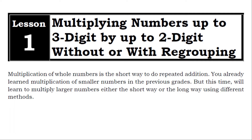Lesson 1: Multiplying numbers up to three digits by up to two digits, without or with regrouping. Multiplication of whole numbers is the short way to do repeated addition. You already learned multiplication of smaller numbers in the previous grades, but this time we'll learn to multiply larger numbers either the short way or the long way using different methods.